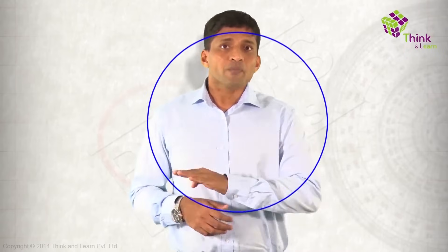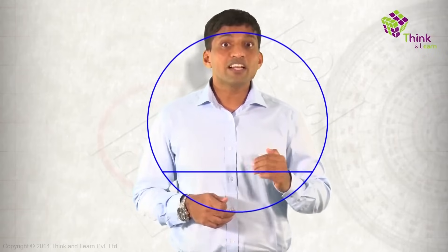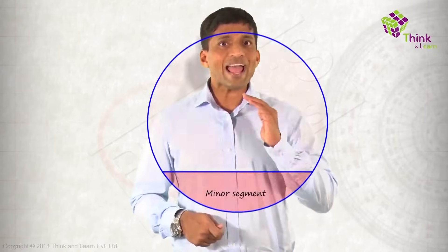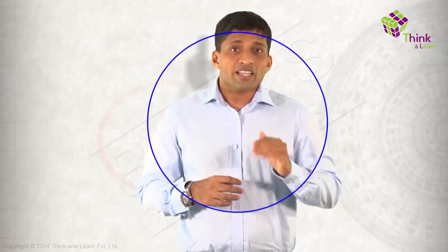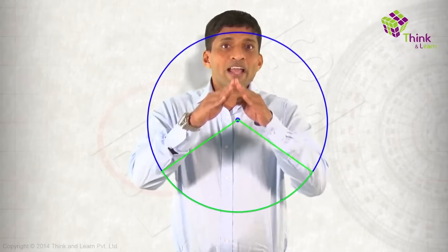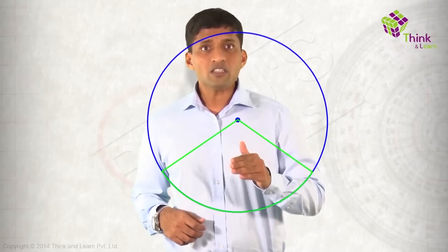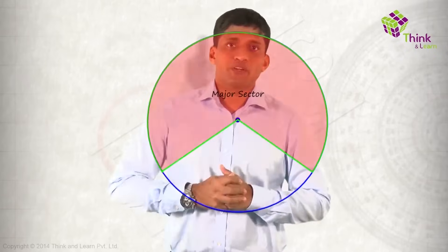Now let's understand segments and sectors — what is the difference? If I take a circle and draw a chord, the region between the arc and the chord is called a segment: the smaller region is the minor segment and the larger is the major segment. In the same circle, if I combine an arc with two radii, that region is called a sector: the smaller region is the minor sector and the larger is the major sector.